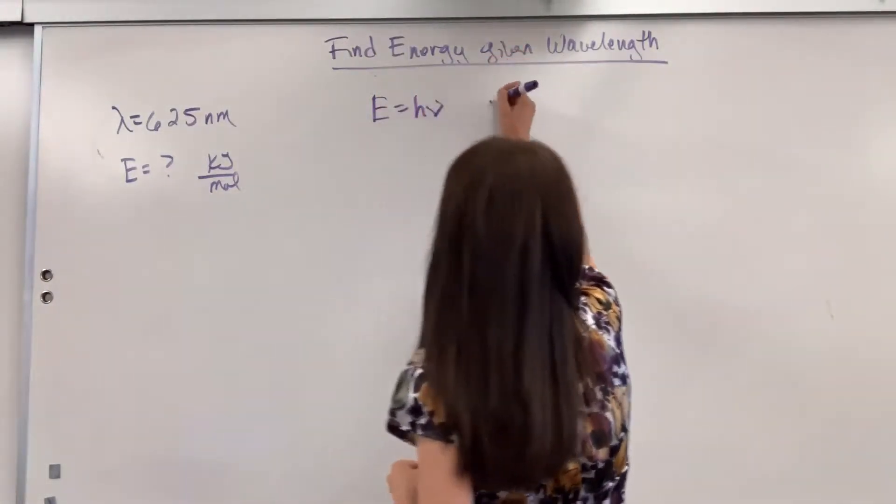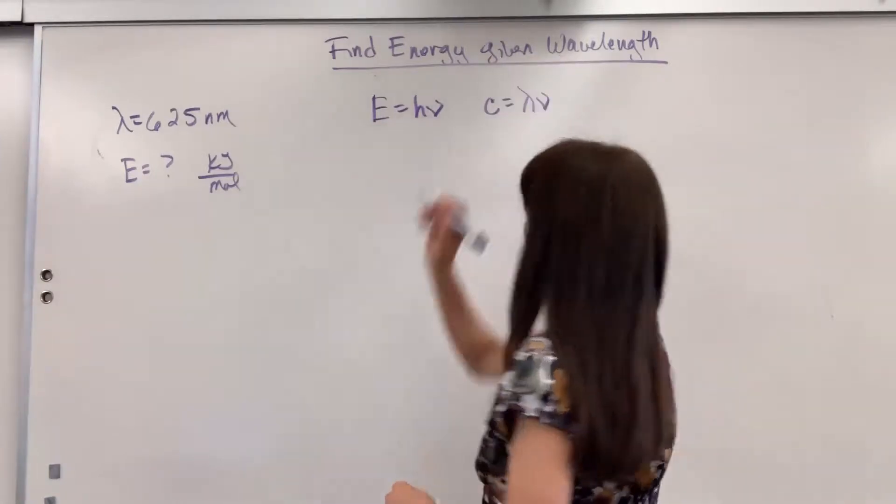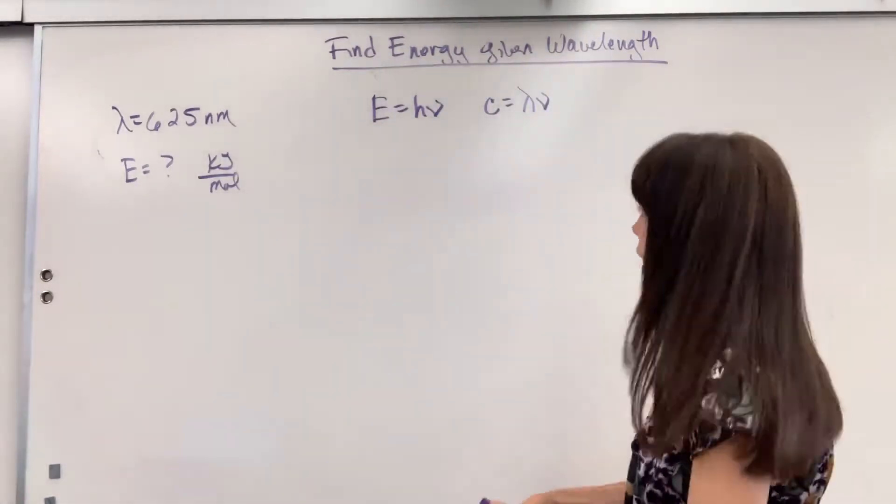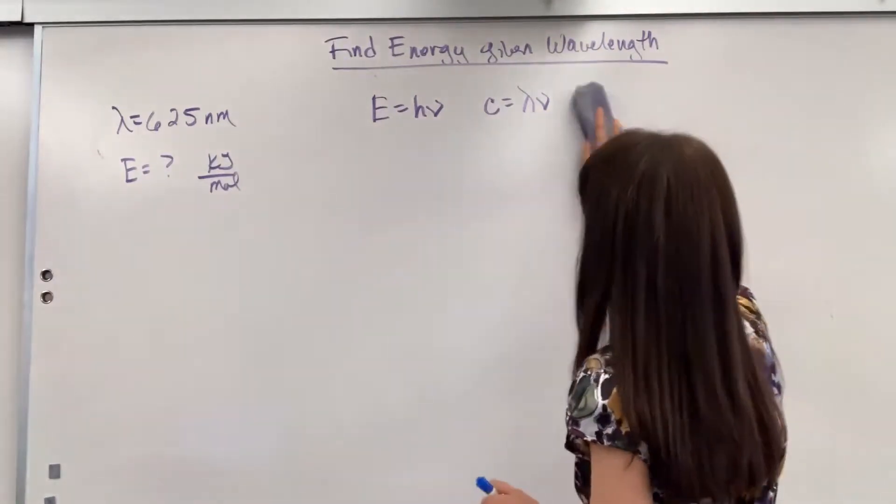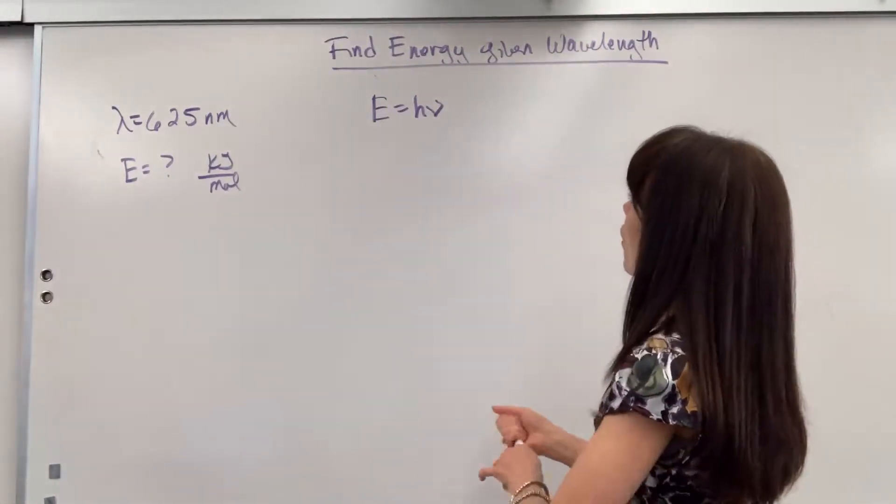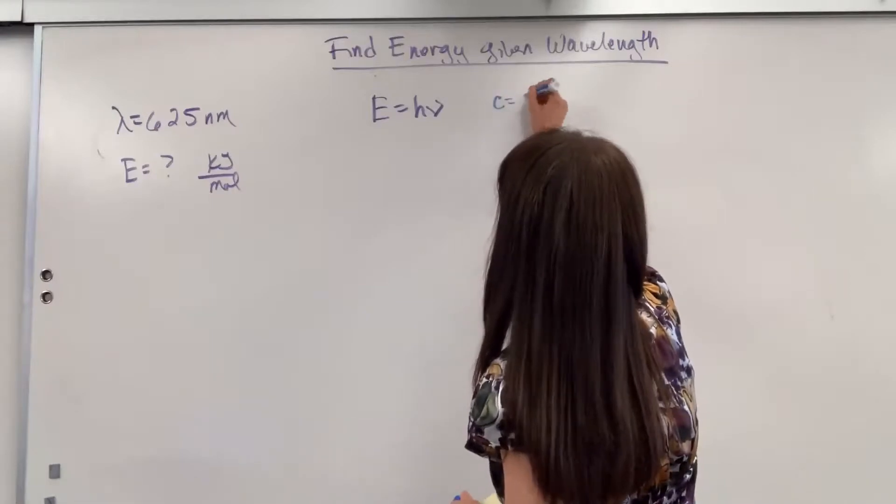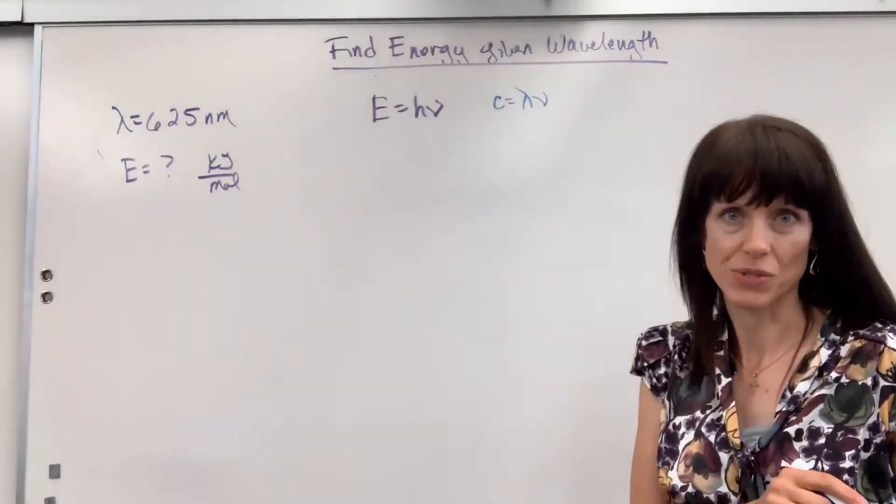We've got our two formulas. Energy equals Planck's constant times nu. Speed of light equals lambda times nu. What I can do, actually, I'm going to do this in a different color so you can track with it. Let's do speed of light in a different color. I'm going to solve symbolically and then substitute.